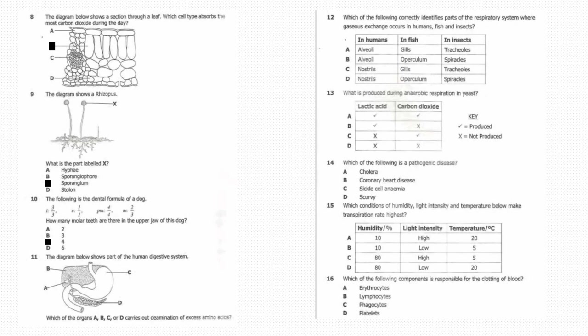Question 12: Which of the following correctly identifies parts of the respiratory system where gaseous exchange occurs in humans, fish, and insects? The answer is A. In humans, alveoli; in fish, gills; in insects, tracheoles. Thirteen: What is produced during anaerobic respiration in yeast? The answer is C. Lactic acid is not produced; carbon dioxide is produced. Fourteen: Which of the following is a pathogenic disease? The answer is A, cholera.